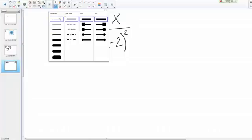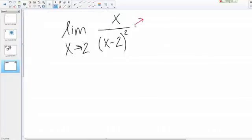If I plug in 2 to the top, I'm just going to get 2 because it's a limit as X goes to 2 of X. And if I plug in 2 to the bottom, I'm going to get 2 minus 2 squared, which is going to give me 0. So I have the form 2 over 0.